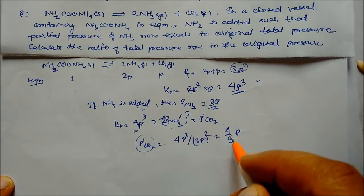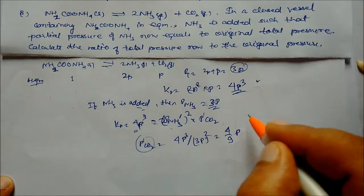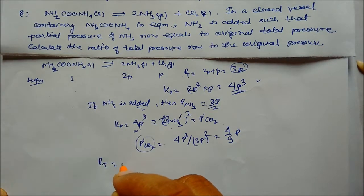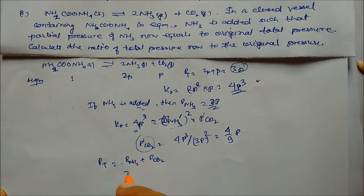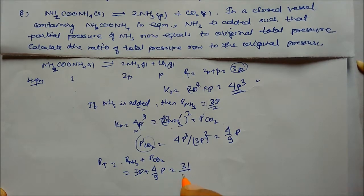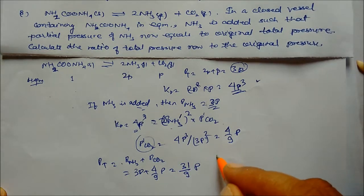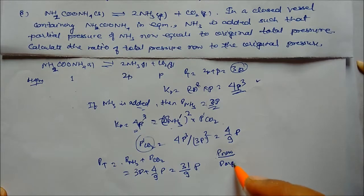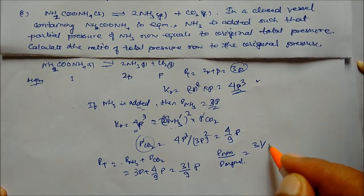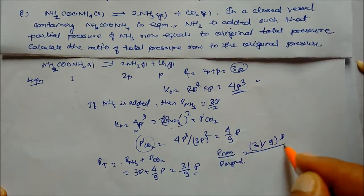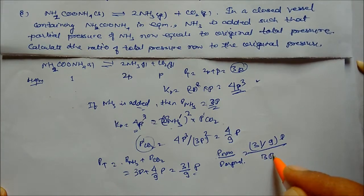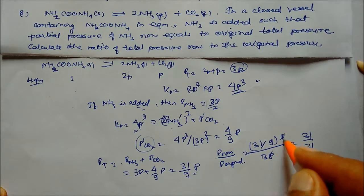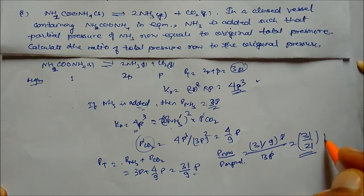New total pressure = partial pressure of NH3 + partial pressure of CO2 = 3P + 4P/9 = 31P/9. The ratio of new total pressure to original pressure is (31P/9) / (3P) = 31/27. This is our final answer for this problem.